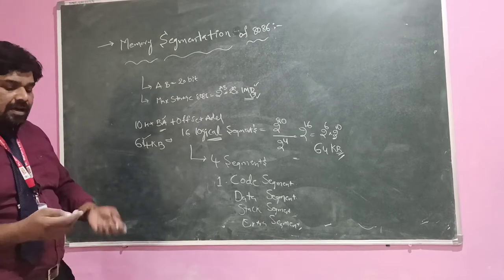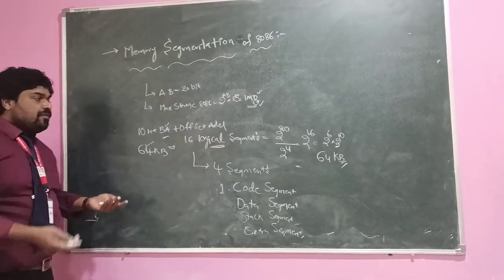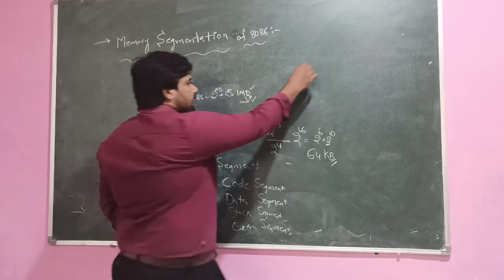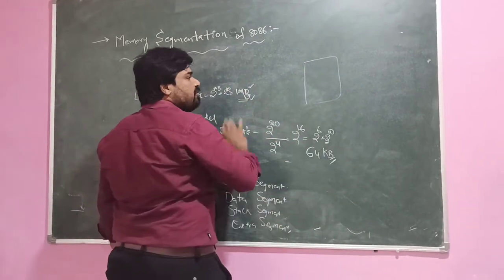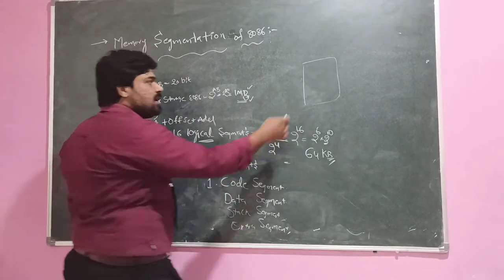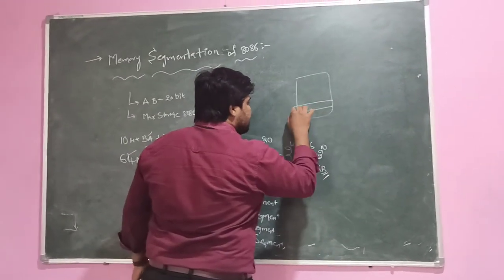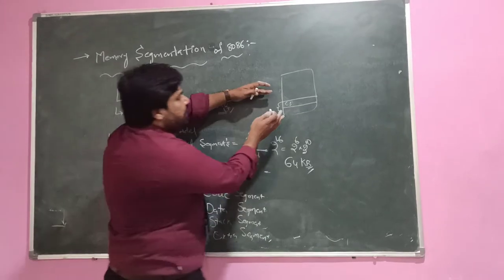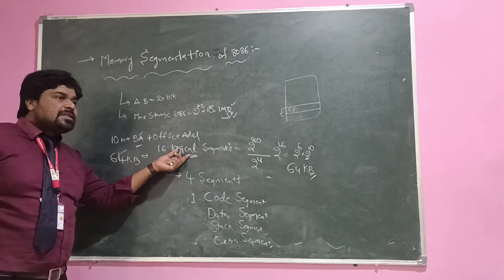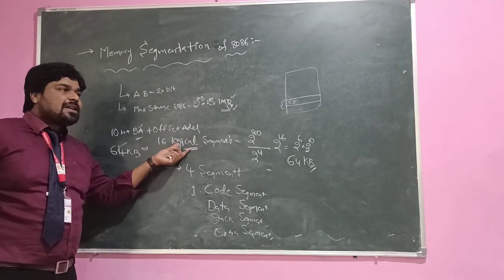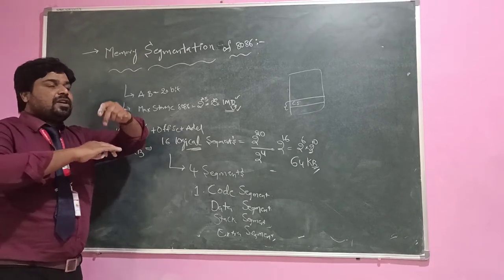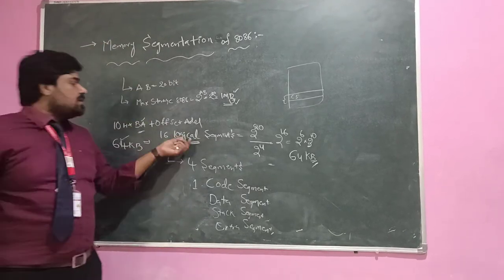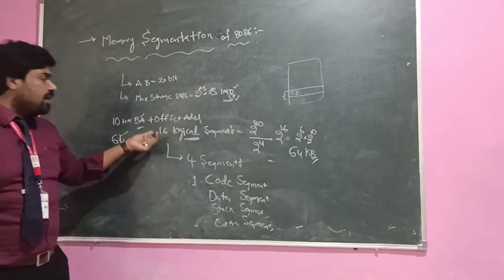In the code segment, whatever the program code is stored. In the data segment, data values are stored. In the stack segment, stack values are stored while writing the program. Extra values are stored in the extra segment. These segments are all logical segments. The difference between physical and logical segments is: physical means the position of the segment is fixed.